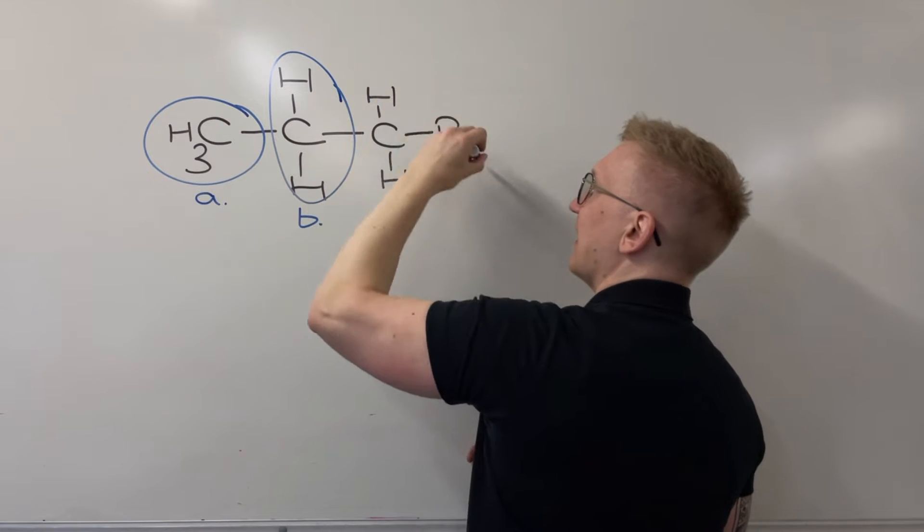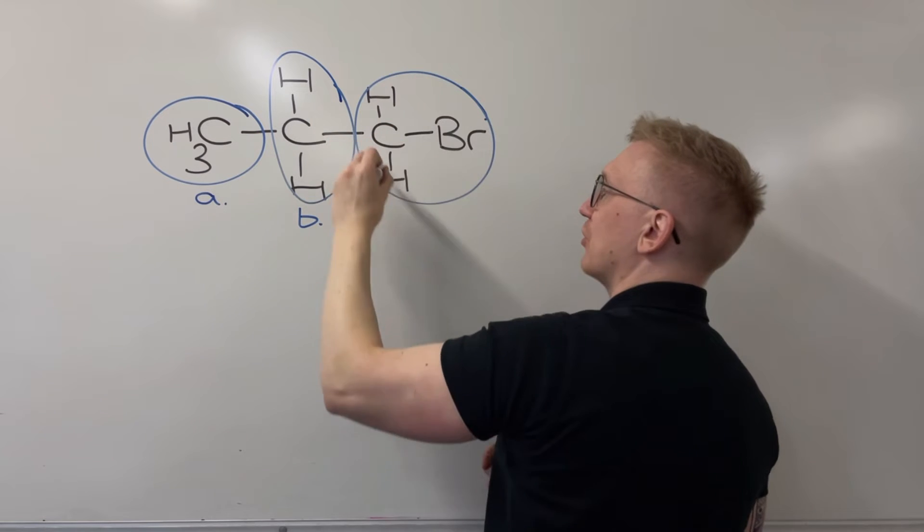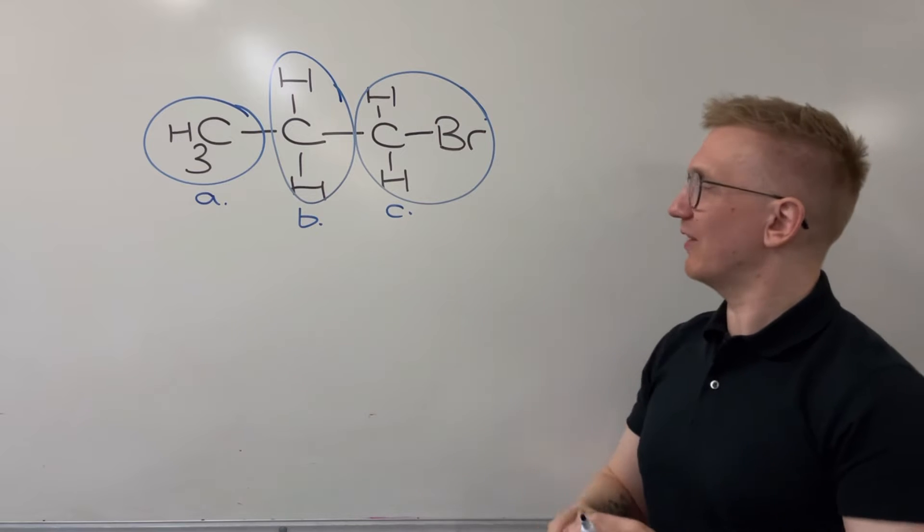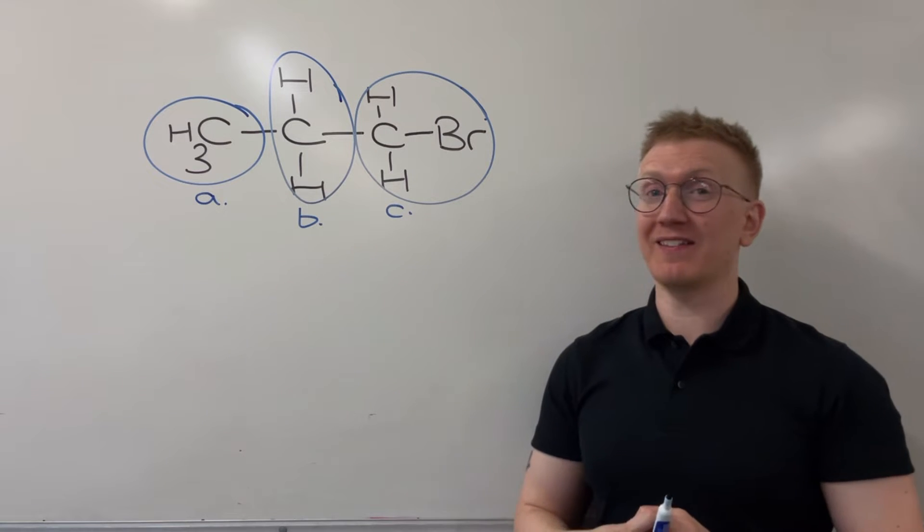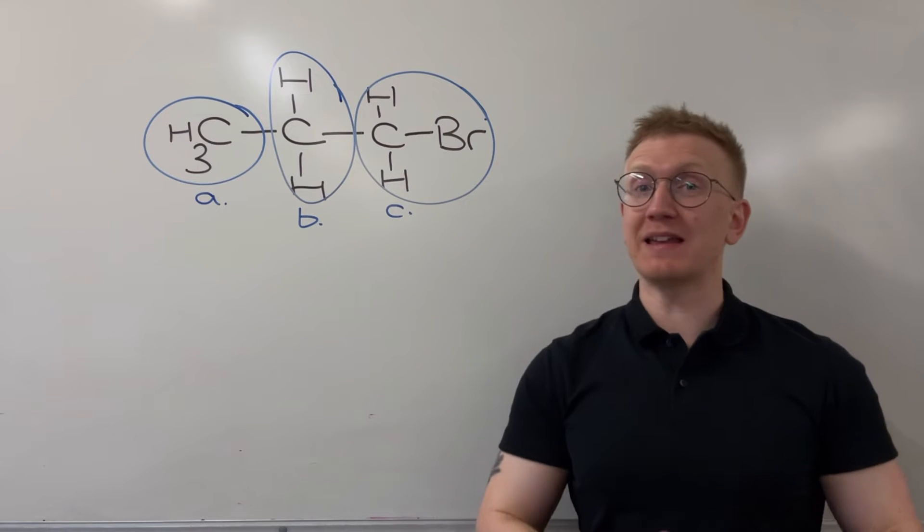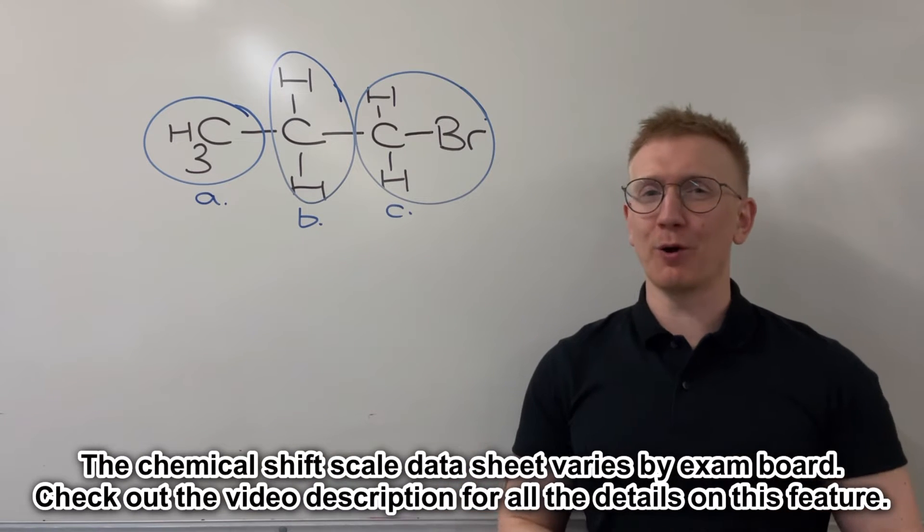And then finally here it doesn't matter how much of this I actually circle up but I'm just going to circle up the whole thing for the sake of not leaving the bromine out. But I'm going to say that this is hydrogen environment C. So first off I would expect to see three different peaks on my hydrogen NMR spectrum of the 1-bromopropane.